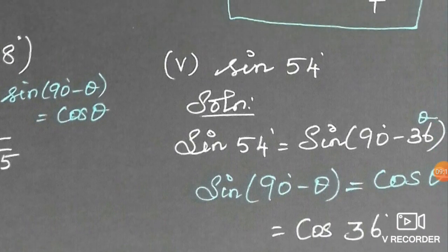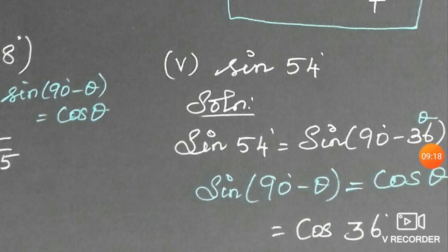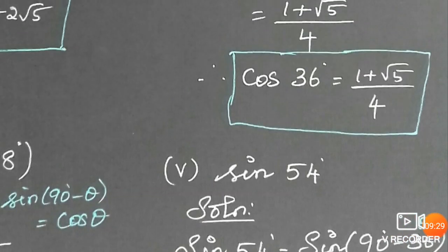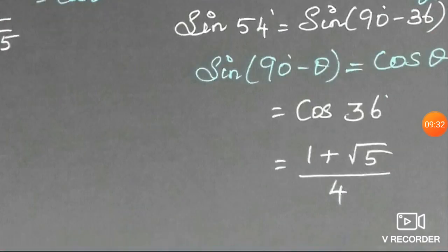Next, find sin 54°. Since 54° = 90° − 36°, using sin(90° − θ) = cos θ, we get sin 54° = cos 36° = (1 + √5) / 4. Thank you, children.